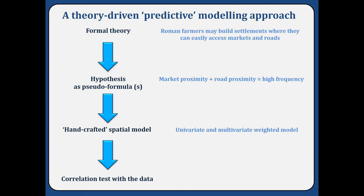To test different hypotheses on social variables I created a very simple, completely theory-driven methodology — not data-driven. I start with a formal statement about what I think favors the implantation of a site, then translate this hypothesis into a pseudo-formula such as: if you have market proximity and road proximity, there should be more frequency of sites in this area. This pseudo-formula is then directly translated into a handcrafted map with classes representing these specific ideas.